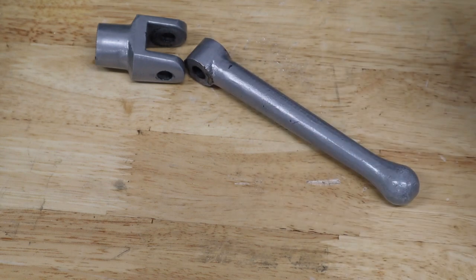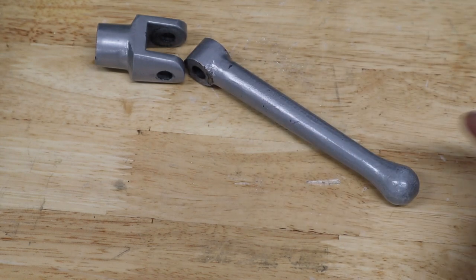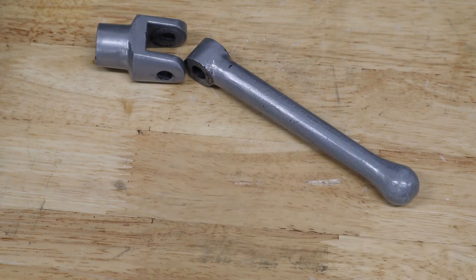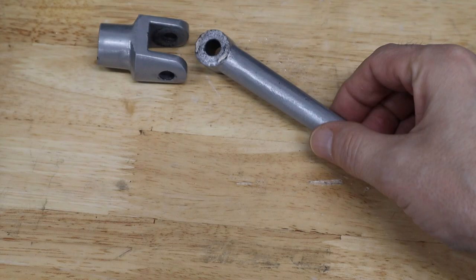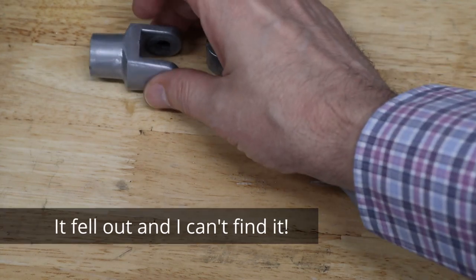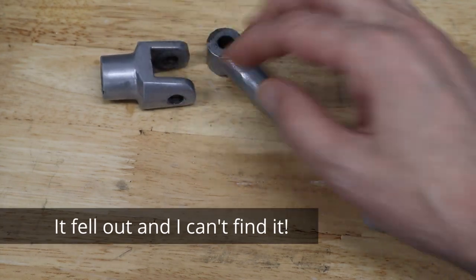The vise handle came apart when I was about to loosen my vise because the pin came out. So what am I going to do? So as you can see, the pin came out of this handle for my Shars vise.